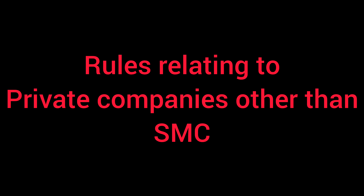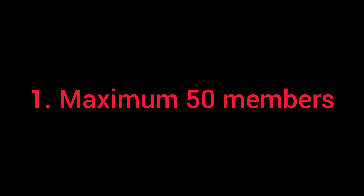In this particular video, I'm going to talk about other kinds of private companies in which there is not just one single person. There are just a few points you need to know about these kinds of companies. First of all, the minimum number is two and the maximum number is 50, which means that the number of members of a private company cannot exceed 50.